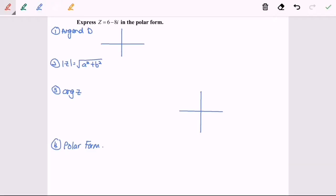Hello everyone, so now I'm going to discuss another example for converting the Cartesian form of a complex number into the polar form. This example is about the fourth quadrant.